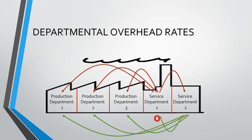Now service department two has zero overheads, but service department one is no longer zero since it just received an allocation from service department two. This is problematic because all overheads need to be allocated to the products. However, products only go through production departments — they never go through service departments. Therefore, all overheads need to be allocated to production departments only, and we cannot sit with some overheads remaining in our service departments.